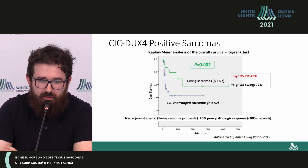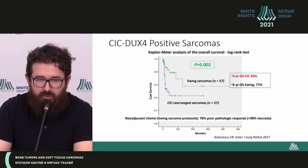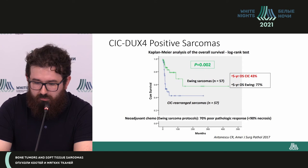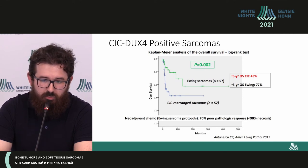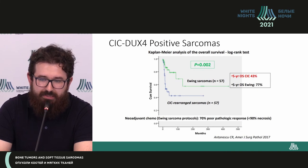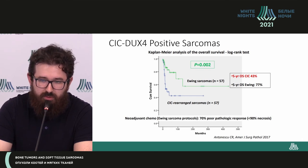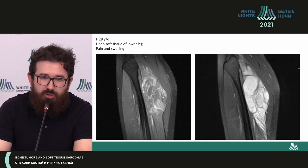What are the clinical peculiarities of CIC-DUX4 sarcomas? They are associated with poorer prognosis compared to Ewing sarcoma, since they respond poorly to neoadjuvant chemotherapy. In 70% of cases we do not achieve significant necrosis, whereas for Ewing sarcoma this occurs in 90% of cases. These tumors are assessed similarly to osteosarcomas using the Huvos modified system, and five-year survival is approximately 40% compared to 77% in Ewing sarcoma.